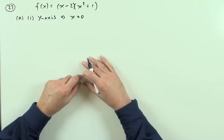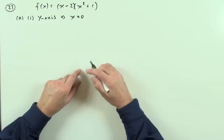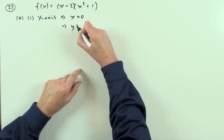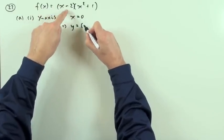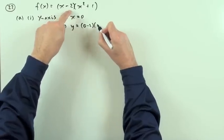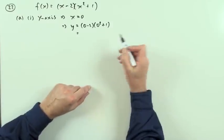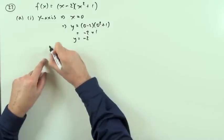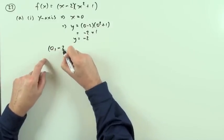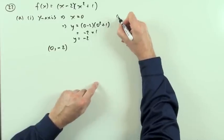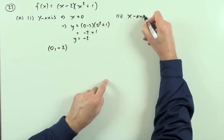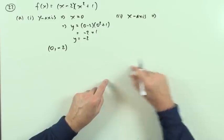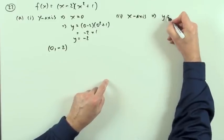I wasn't paying attention and answered these the other way around — normally you'd work out the y-axis first since it's the simpler calculation. If x is zero, then y equals zero minus two times zero squared plus one, which is negative two times one, which is negative two. So it's the point (0, -2) on the y-axis.